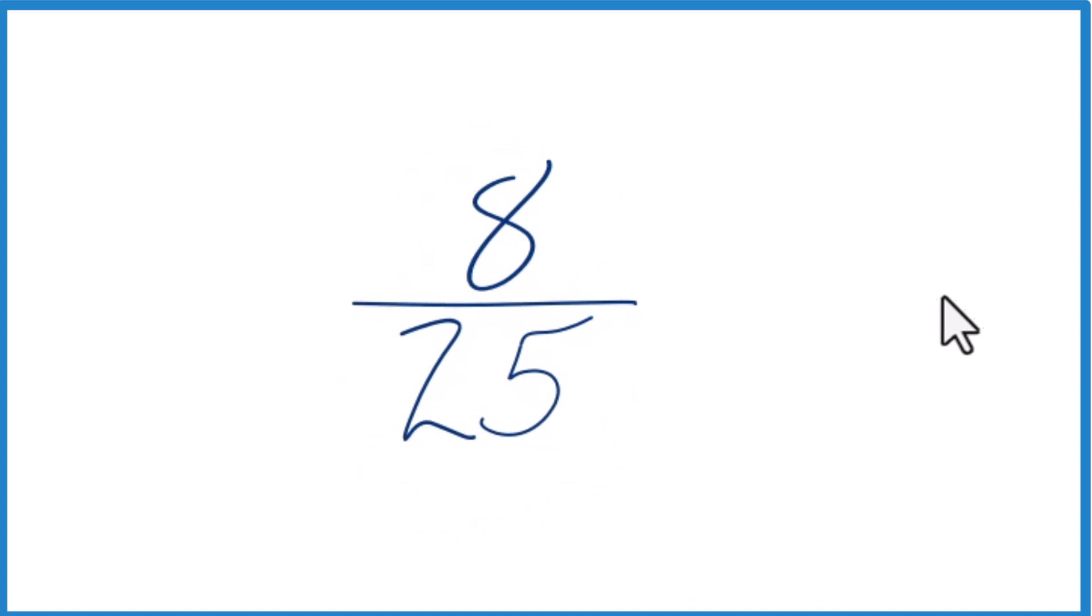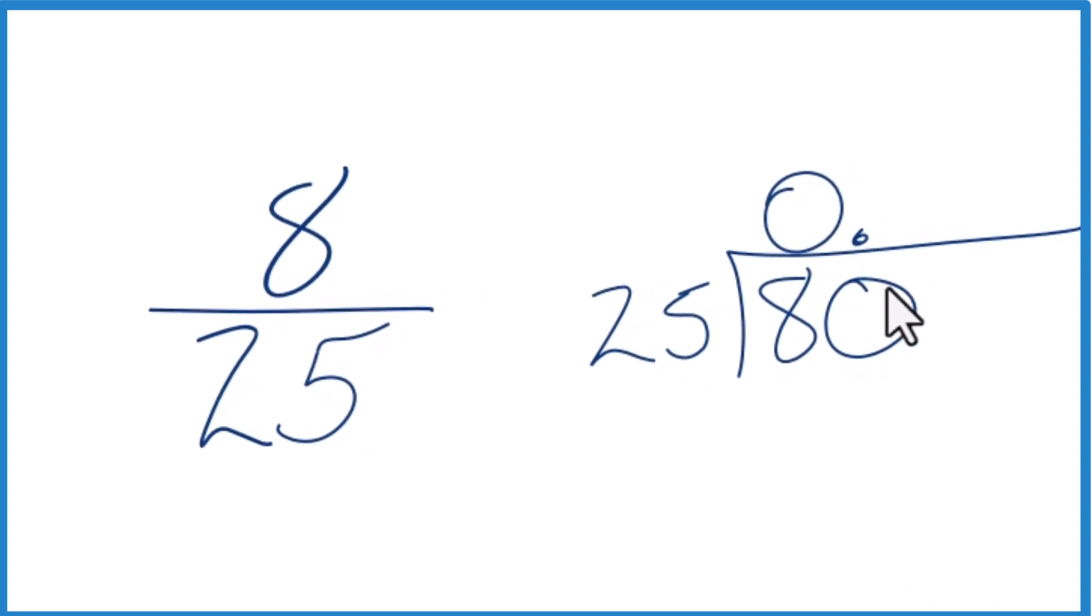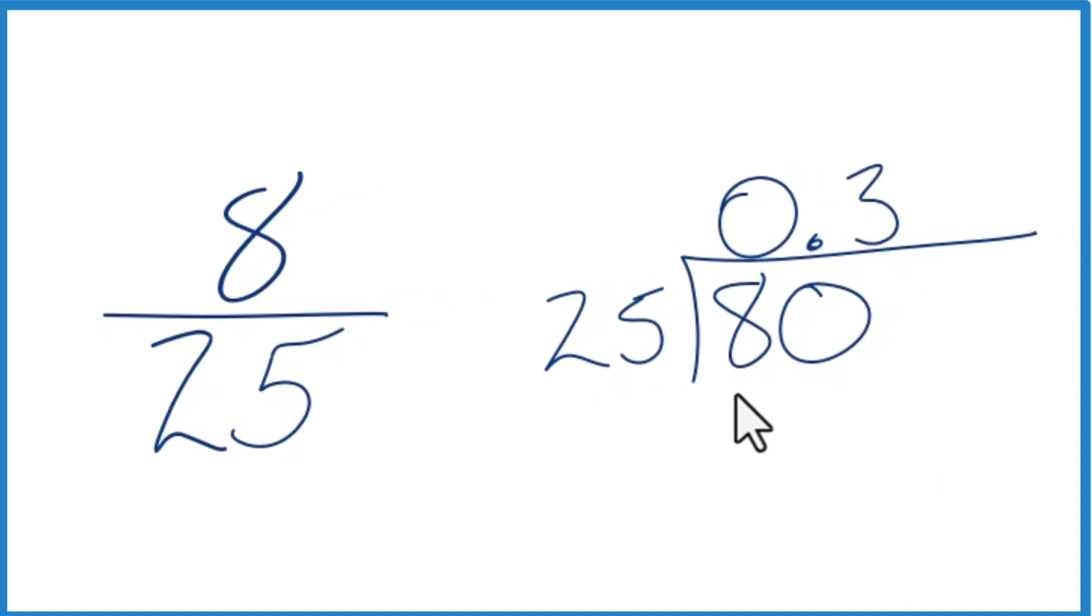So we're going to take 8, and we want to see how many times 25 goes into 8. So 25 doesn't go into 8. We could make it 80 if we put a 0 and a decimal point up here. Now 3 times 25,